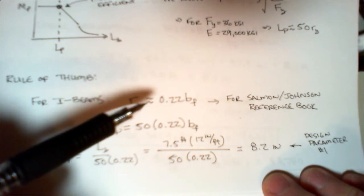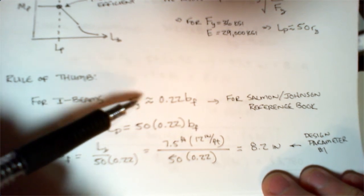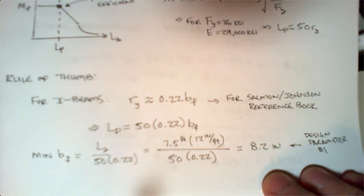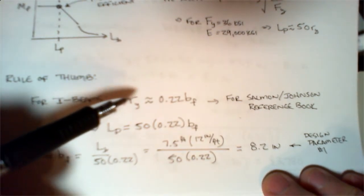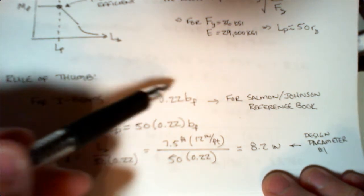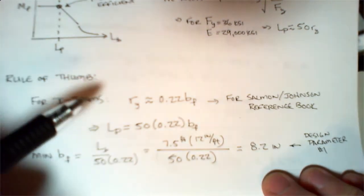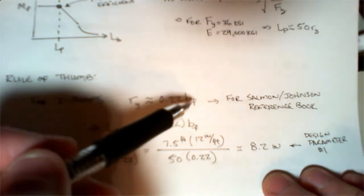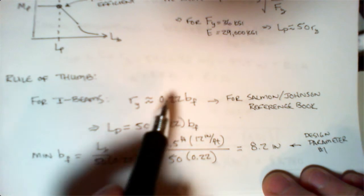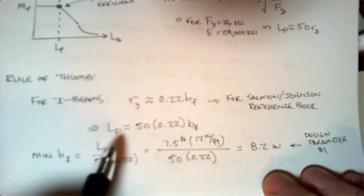I need something to make sure my Lp value is also okay. If I use this rule of thumb—this is not in our McCormick textbook, it came out of one of the references listed in the syllabus, the Johnson textbook—and I make this assumption, they relate the radius of gyration to some parameter, in this case bf.